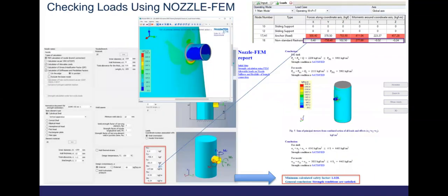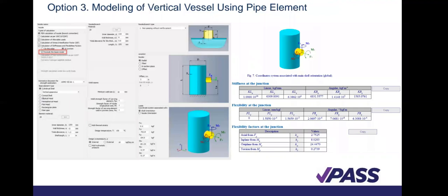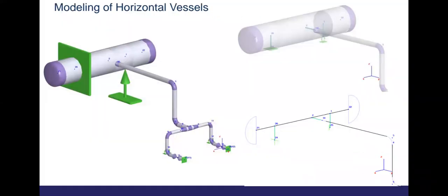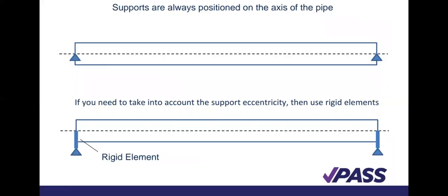Here is a model. This model is showing the horizontal vector. If you watch very well, you will see that it has a support and it also has different components, different parts and features. So remember that the supports are always positioned on the axis of the part. You put the plane of the support on the axis of the model of the vertical column.